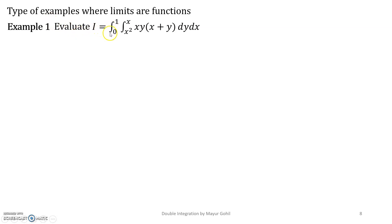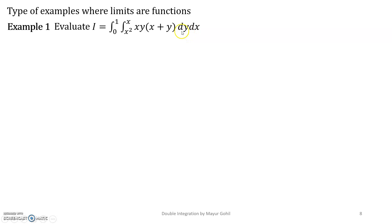The first example is: evaluate the integral from 0 to 1, integral from x² to x, of the function xy(x + y) dy dx. Observe that the limits here are functions, not constant numbers. The outer integral has constant limits, but inside you have functions. When you have this kind of integration, the procedure is the same, but you cannot change the order.